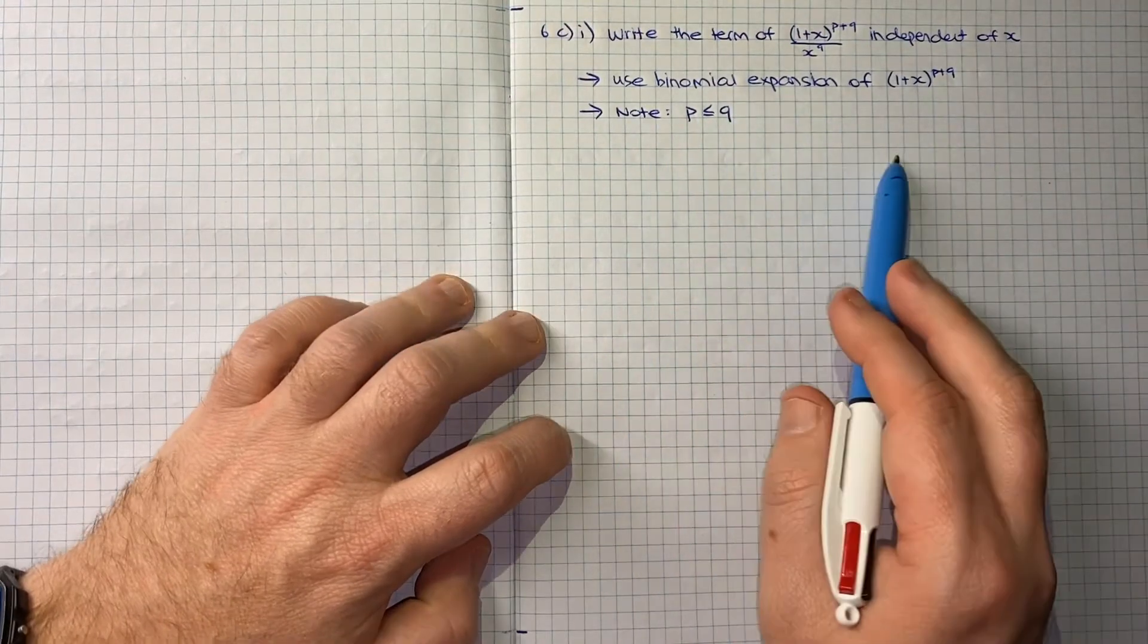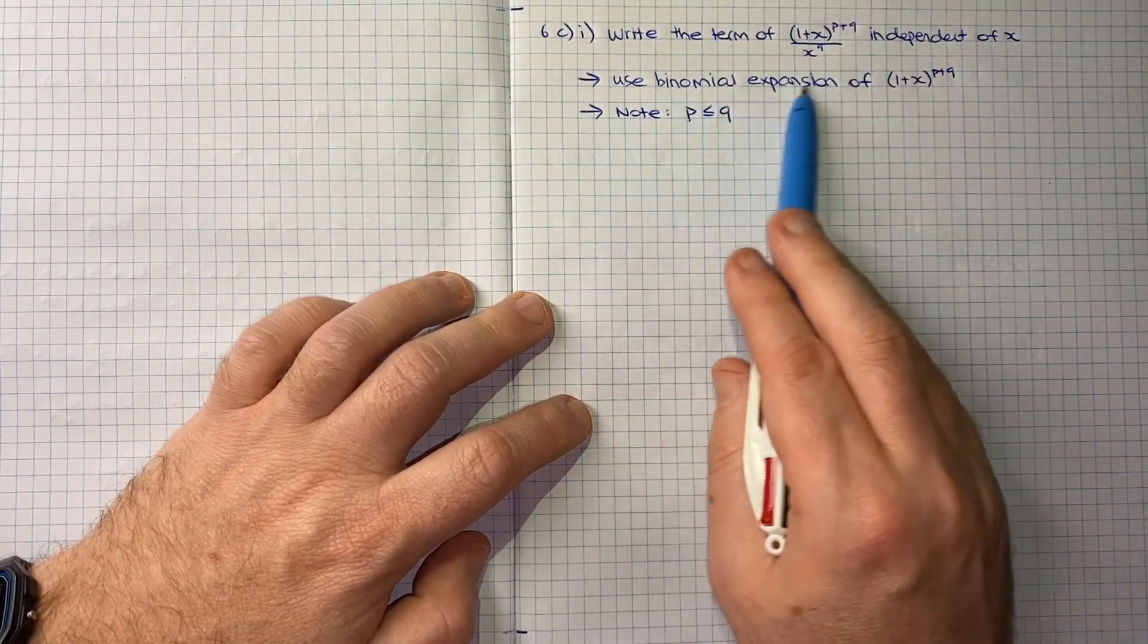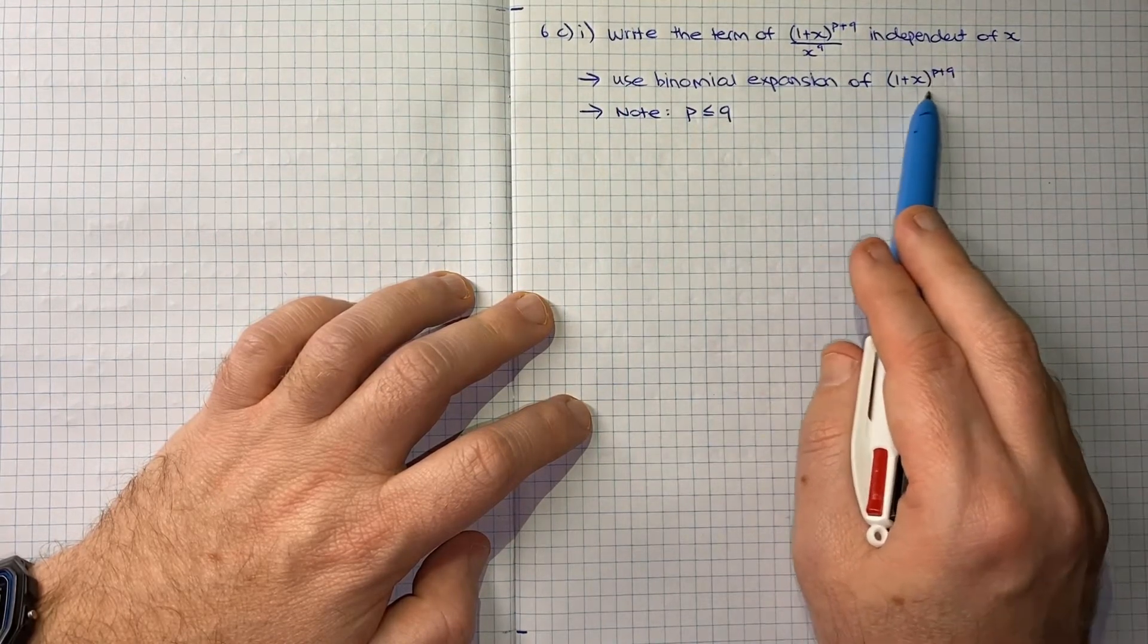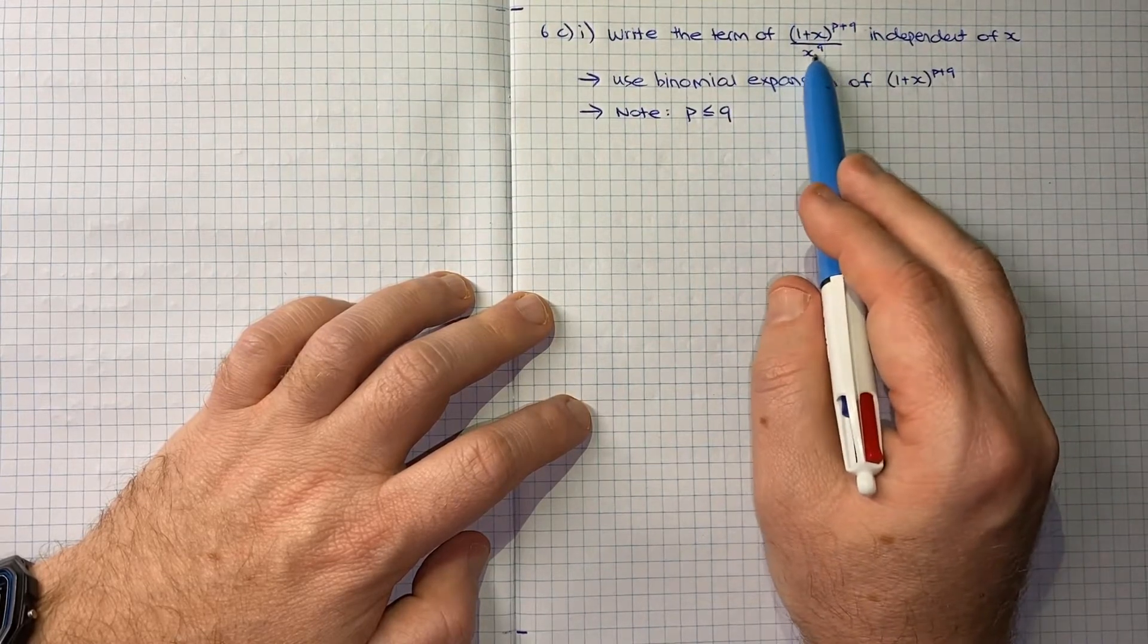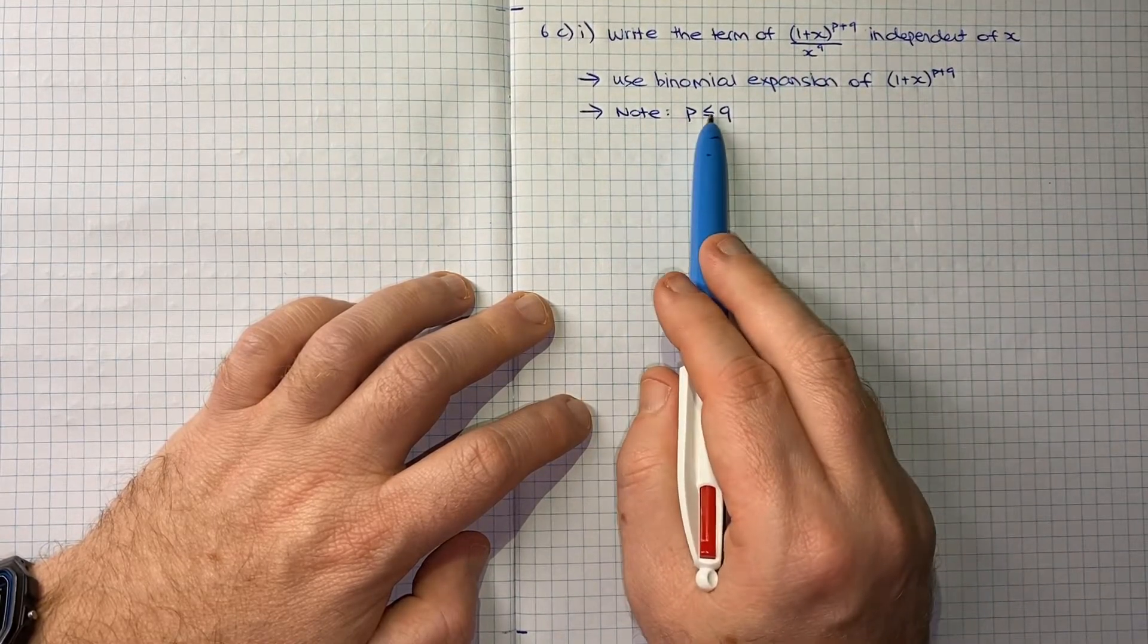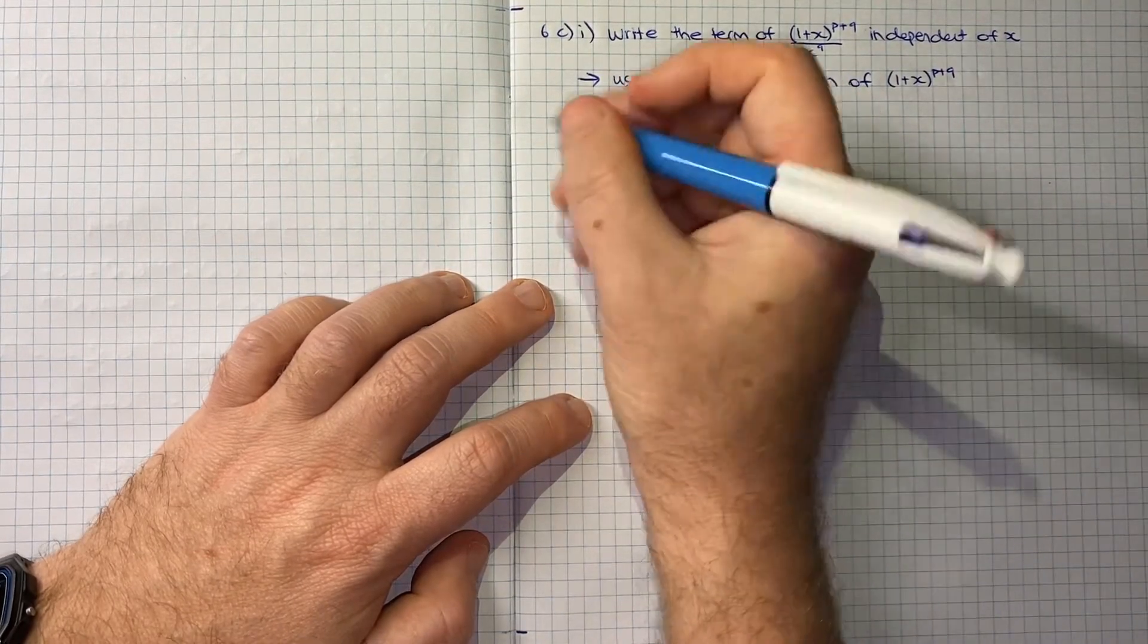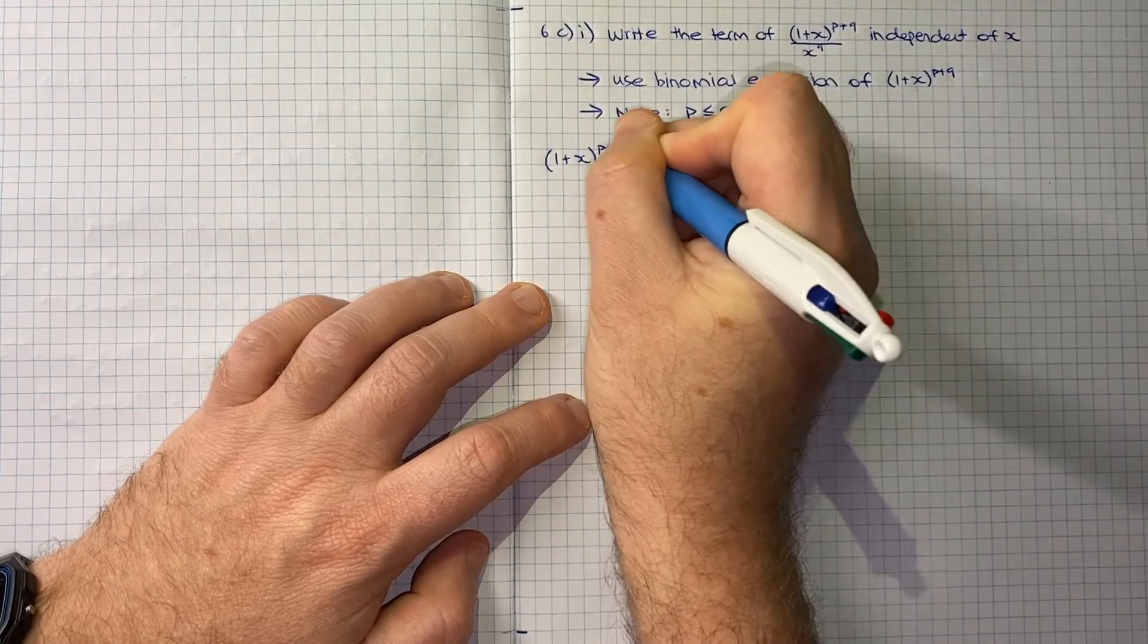Here I've written up the facts of the question. We're given this guide to use the binomial expansion of (1+x)^(p+q), and that can get us on our way to thinking about this whole term which has x^q in the denominator. We're told to note that p will be less than or equal to q.